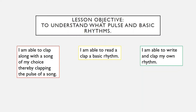Now, the lesson objectives for this section are: to understand what pulse and a basic rhythm are. At a very basic level, you should be able to clap along with a song of your choice and thereby clap the pulse of a song. When you're a bit better at that — in the yellow box — you are able to read and clap a basic rhythm. And then, in the green box, you are able to write and clap your own rhythms. So that's what we're working towards today.